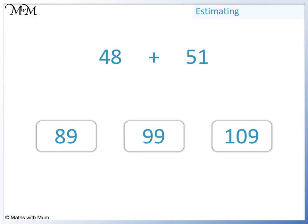To quickly find the answer we can estimate by rounding 48 and 51 to the nearest 10. 48 rounds to 50 and 51 also rounds to 50. 50 plus 50 equals 100. The answer closest to 100 is 99. 48 plus 51 is 99.